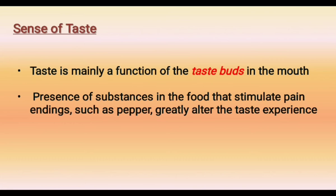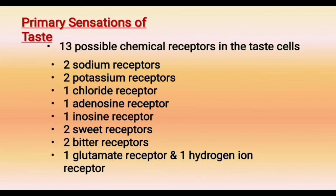Primary sensations of taste — taste cells have 13 chemical receptors. These are: 2 sodium receptors, 2 potassium receptors, 1 chloride receptor, 1 adenosine receptor, 1 inosine receptor, 2 sweet receptors, 2 bitter receptors, 1 glutamate receptor, and 1 hydrogen ion receptor. So all of these are 13 chemical receptors in the taste cells.